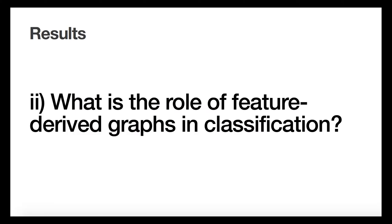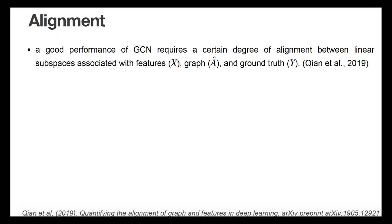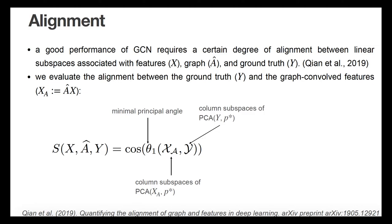To gather further insight into the role of the constructed graphs in classification, here we explore their properties from two complementary perspectives. On the one hand, the previous study has pointed out a certain degree of subspace alignment among features X, graph A-hat, and the ground truth Y is needed for GCN to achieve good performance. Here, inspired by this, we evaluate the alignment between the ground truth and the graph-convolved features by measuring the cosine of the minimum principal angle between their subspaces, composed of the top principal components.